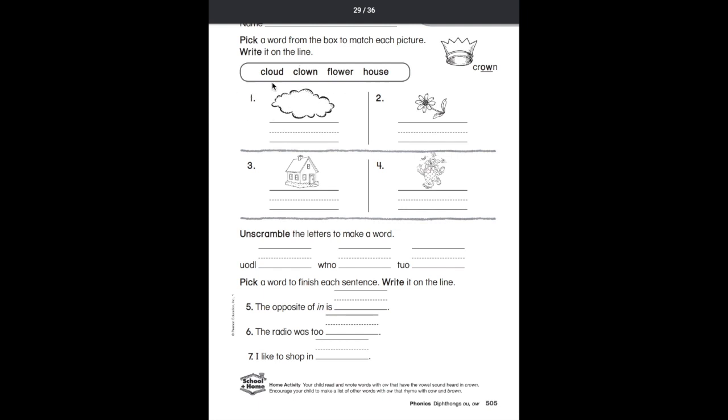Let's take a look. Pick a word from the box to match each picture, write it on the line. Number one: what is that? Is that a clown? No. Is that a flower? No. Is that a house? That's right, this is a house. Wait, no, that's not a house. Is that a cloud? That's a cloud: C-L-O-U-D, cloud. Number two: that definitely looks like a house. What? It's not a house, it's a flower: F-L-O-W-E-R, flower.